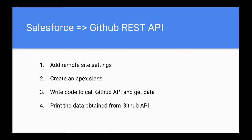In this example, we are going to go from Salesforce to the GitHub REST API. We are going to make a REST API call from Salesforce to the GitHub API, get some data from the GitHub API, and print that in Salesforce using System.debug.